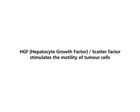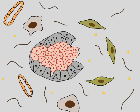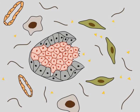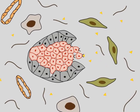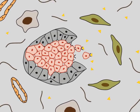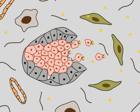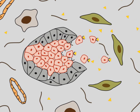HGF (hepatocyte growth factor / scatter factor) stimulates the motility of tumor cells. Tumor-associated fibroblasts can affect the behavior of tumor cells. The fibroblasts may produce scatter factor, also known as hepatocyte growth factor or HGF. Scatter factor binds to a cell membrane receptor of tumor cells called MET. Activated MET stimulates motility and invasive growth of tumor cells.